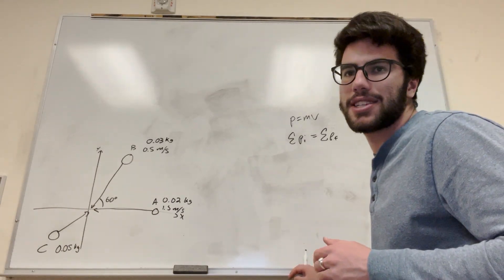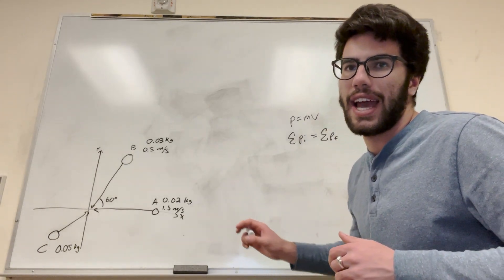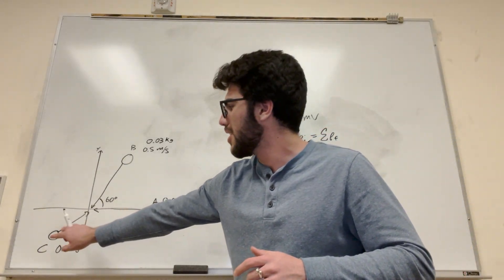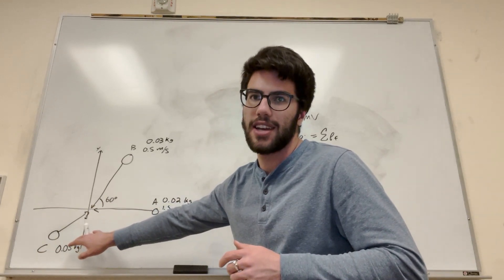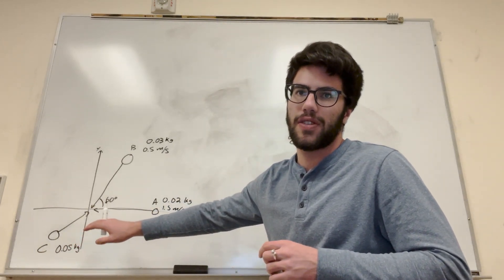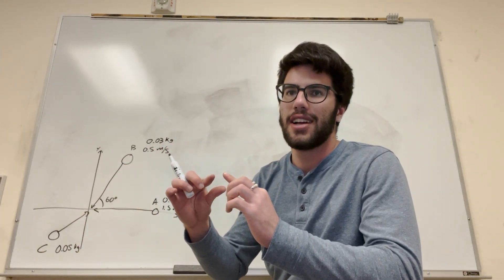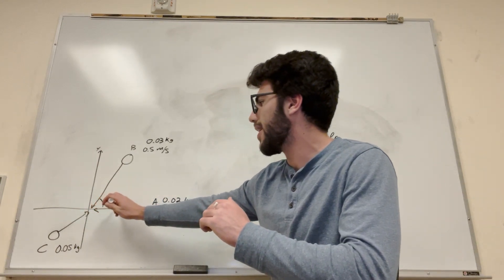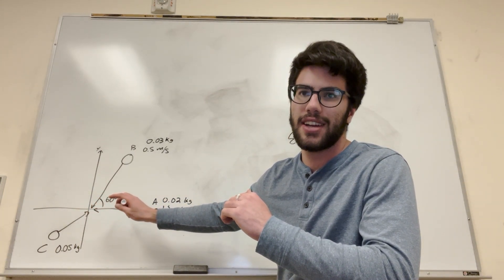So let's start with part a. Part a is: what must the x component of this c ball — basically the velocity of c — be in order for when all three objects collide, they start moving in the positive x direction at half a meter a second?